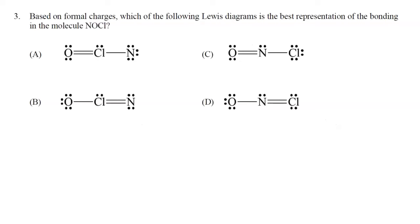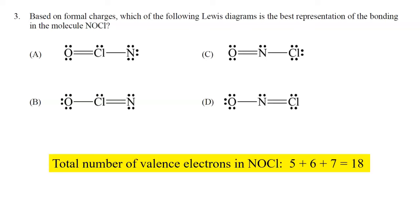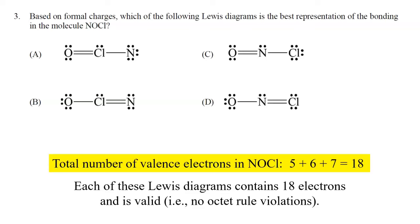Question 3 says, based on formal charges, which of the following Lewis diagrams is the best representation of the bonding in the molecule NOCl? Counting total valence electrons: 5 for nitrogen, 6 for oxygen, 7 for chlorine — a grand total of 18. Looking carefully at all four Lewis diagrams, each contains 18 valence electrons with no octet rule violations. So all four are technically valid Lewis diagrams.